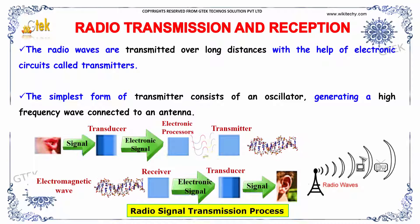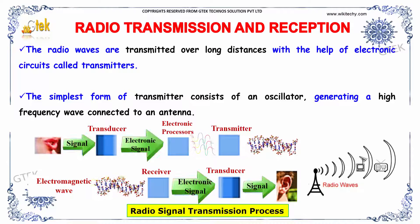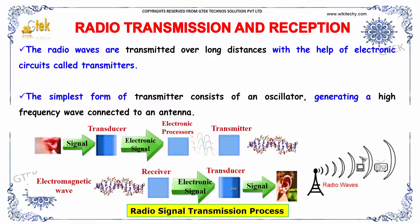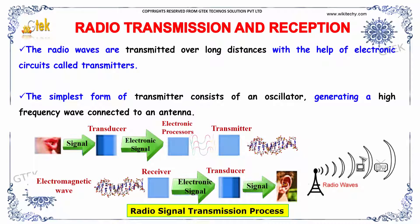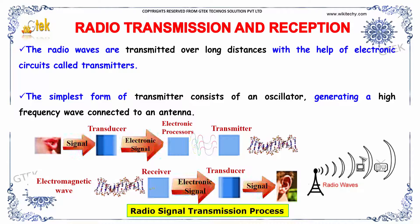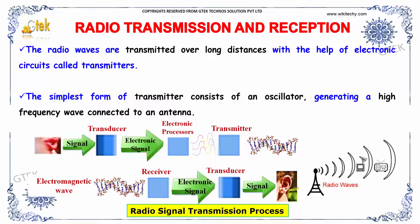At the receiver end, electromagnetic waves are picked up using an electronic signal and converted back through the transducer to recover the original signal. The signal travels in this direction and is received here.